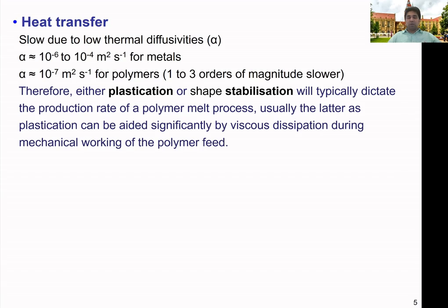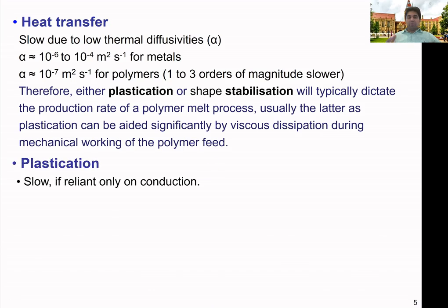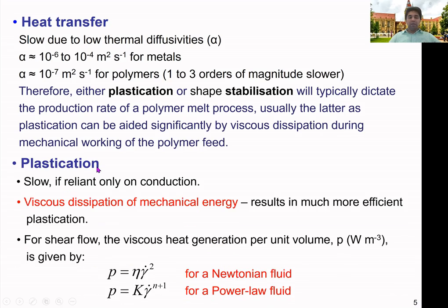If we rely completely on conductive heat to heat up polymeric material, the plastication process can be very slow. Therefore, other modes of heat generation — frictional heat and viscous heat dissipation — play an important role. In some processes, specific coatings are used inside the barrel or on the screw surface to promote friction and conveying, influencing the frictional heat generation and the time taken for plastication.